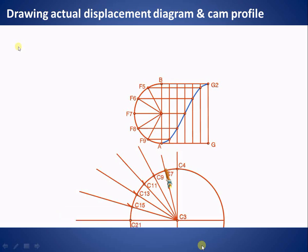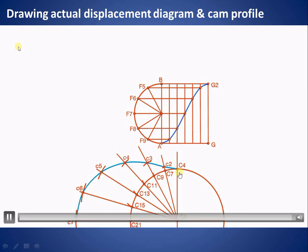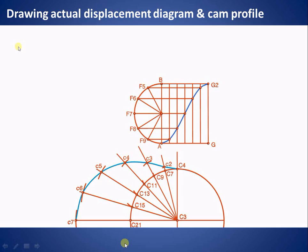Transfer the distances from the displacement diagram onto the radial lines of the base circle. Transfer the first distance on the first ray, the second distance on the second ray, the third one measured and transferred using a compass, and likewise mark all the remaining points. Then draw a smooth curve passing through all these particular points — this curve is known as the cam profile. For demonstration purposes, we have considered only the outstroke; similarly we can consider the return stroke and draw the complete cam profile.